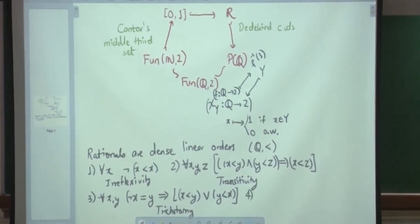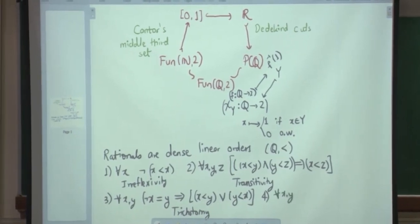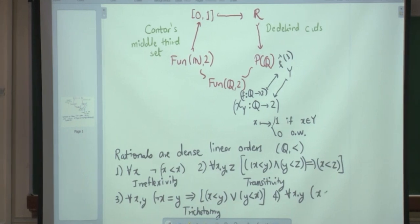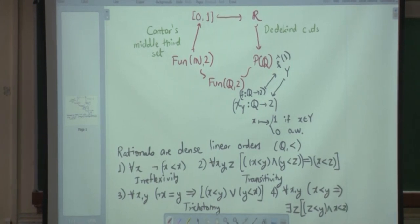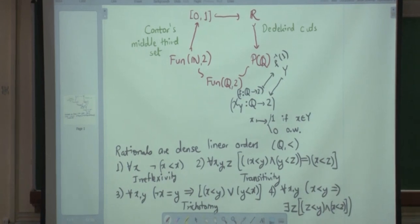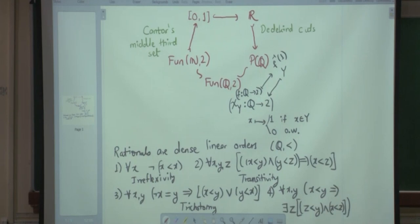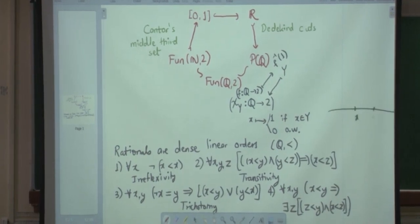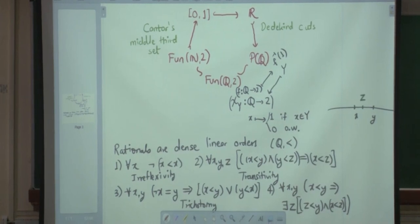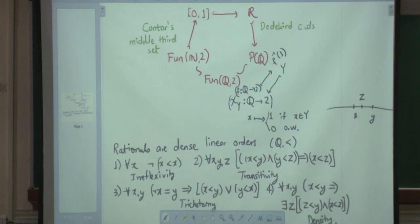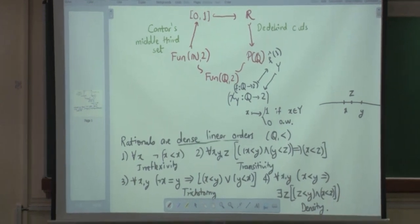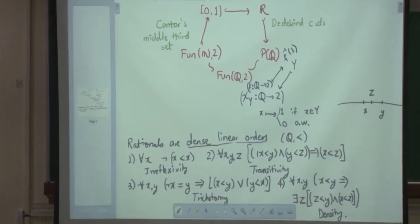Finally we have the density property: for all x, y, if x < y, then there exists z such that x < z < y. Given any two rational numbers x and y, there must exist a rational number between them. You can find such a z by taking the average. This is called the density property. So rationals are dense linear orders — linear orders satisfy the first three conditions, and density adds the fourth.